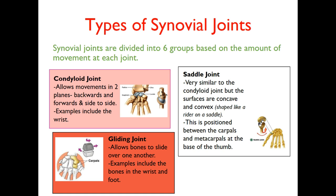The third type of synovial joint is the saddle joint, which is quite similar to a condyloid joint. However, the surfaces are concave and convex — one is slightly dipped and the other slightly oval, shaped a bit like a rider on a saddle. Saddle joints are positioned between the carpals and the metacarpals, and the only place you find them is at the base of the thumb. Think about a tennis player gripping a racket — that's because of your saddle joint.